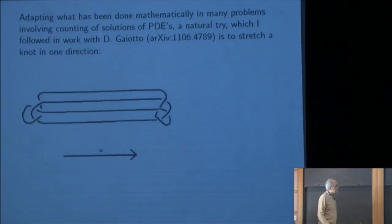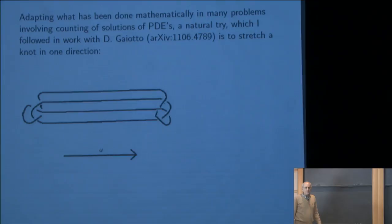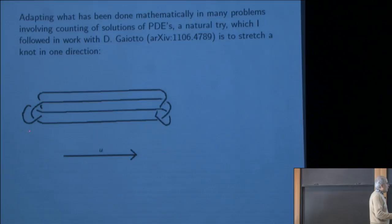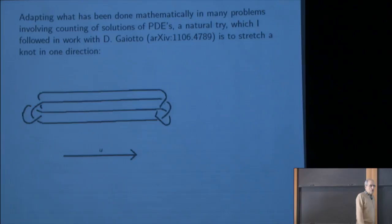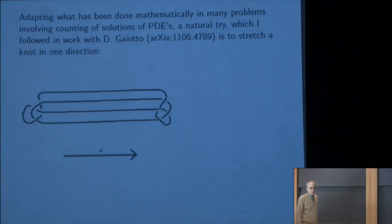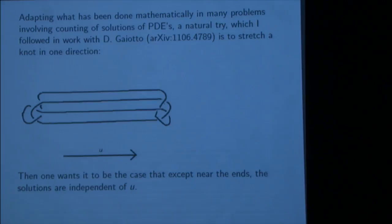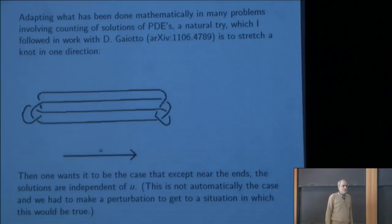A natural thing to do is to stretch a knot in one direction. This is a knot presented in terms of a projection to a plane, but now we've stretched it for a long way in one direction, which I'll call the u direction. The knot consists of a lot of parallel strands that go on for a long distance in u, and then somehow terminates at the two ends. You want it to be the case that except near the ends, these solutions are independent of u. That's not automatically true, and Gaiotto and I actually found that it wasn't true for the simplest version of the equations. We had to make a perturbation to a slightly more generic situation.